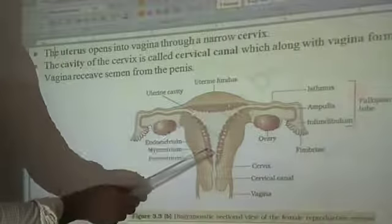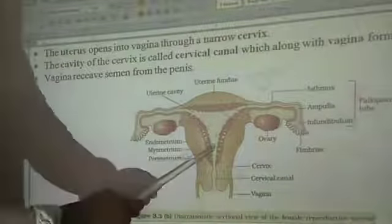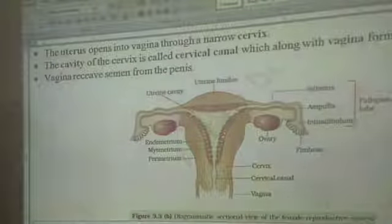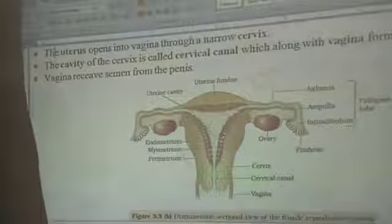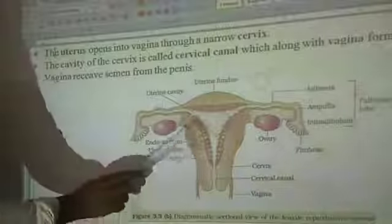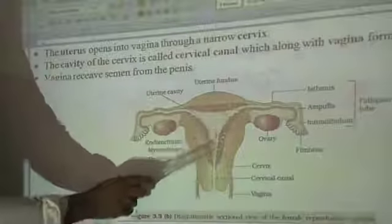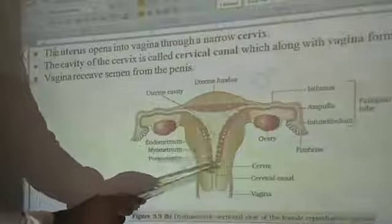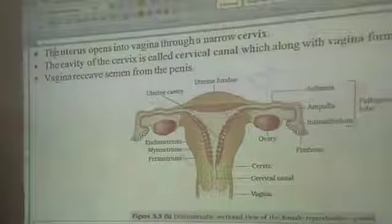The innermost layer of the uterus is called the endometrium, which is mainly made of glands and different types of blood vessels. In every menstrual cycle, the endometrium ruptures and becomes fluid, which comes out through the vagina — this is menstruation.